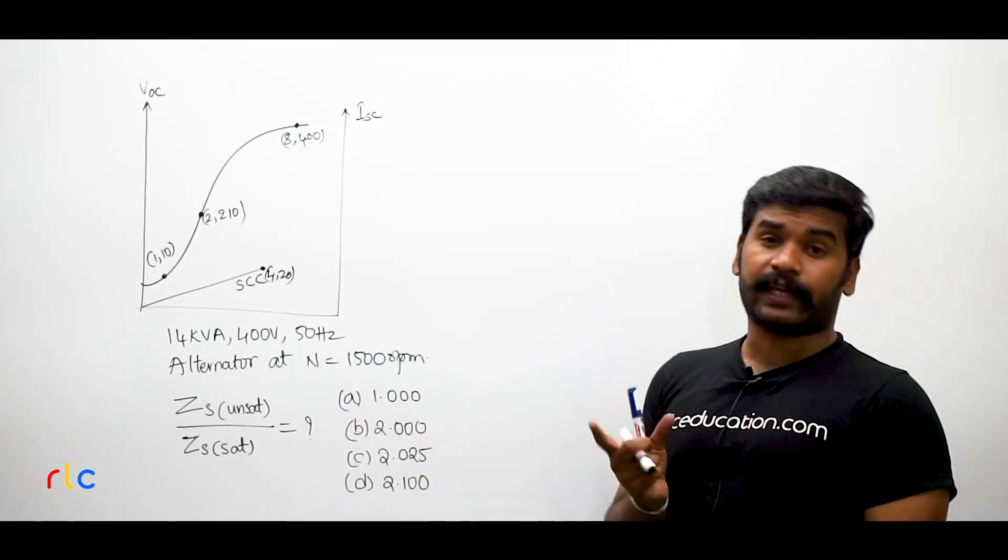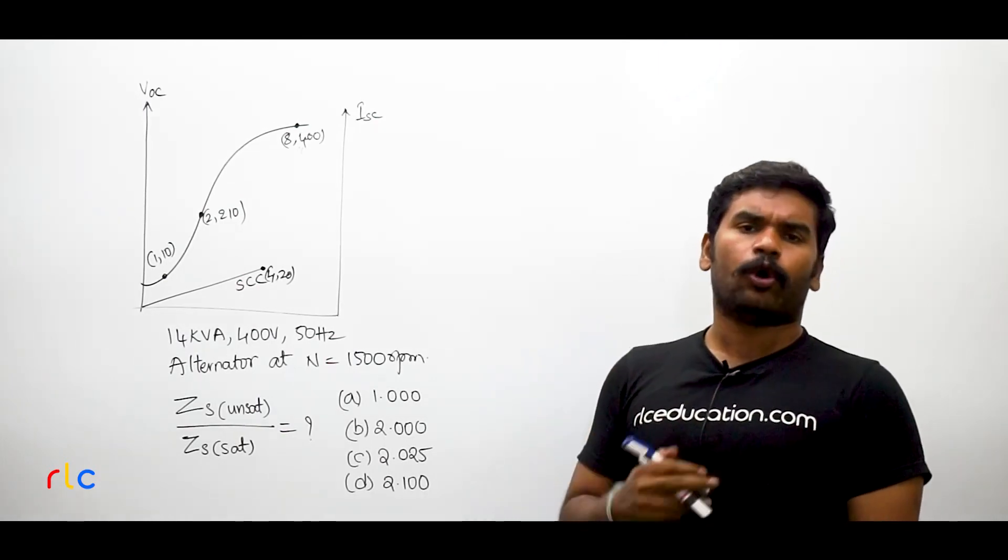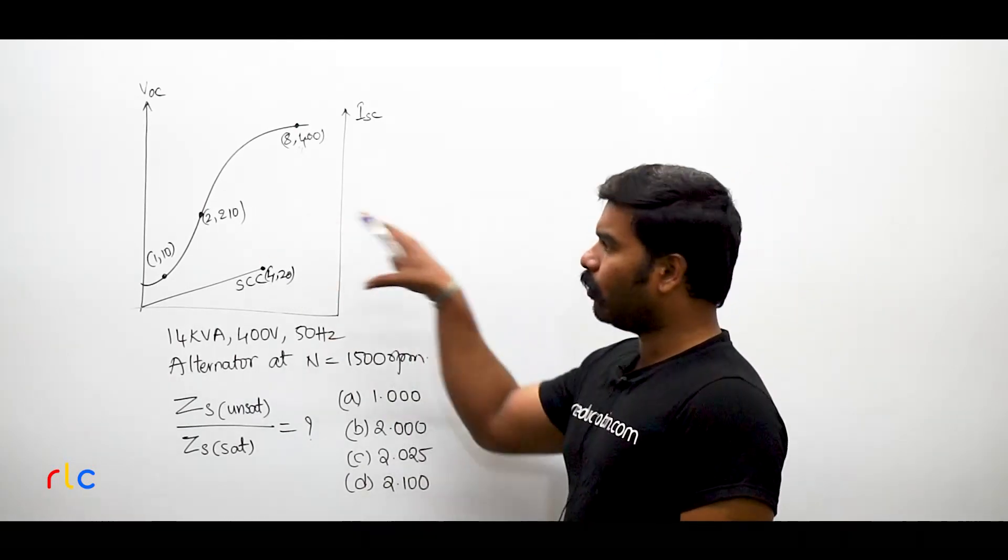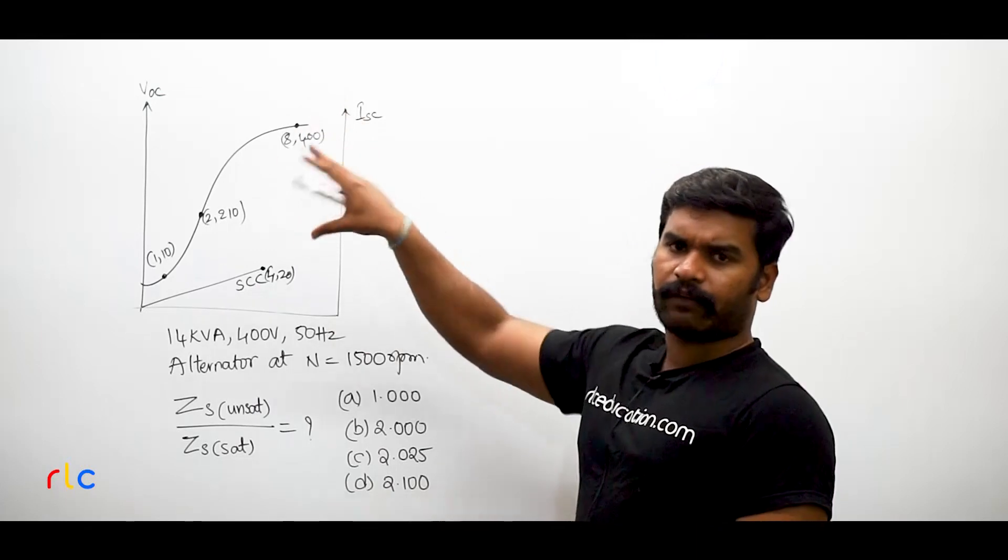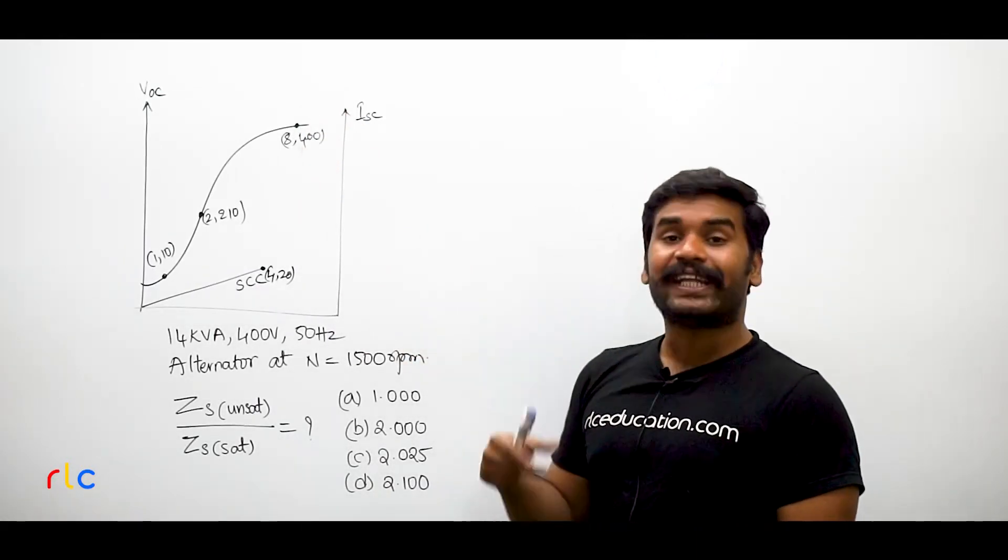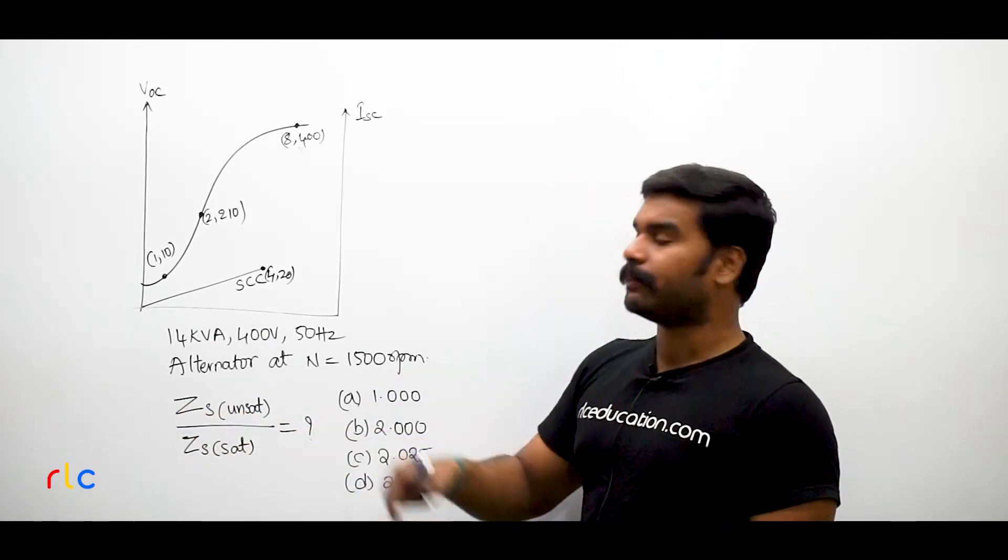Finally, he says that he has conducted some OCC test and SCC test, that is open circuit test and short circuit test, and he has drawn the OCC characteristics and SCC characteristics. He has given you the graph in the exam like this, and he is asking you to find out the ratio of Synchronous impedance unsaturated by Synchronous impedance saturated.